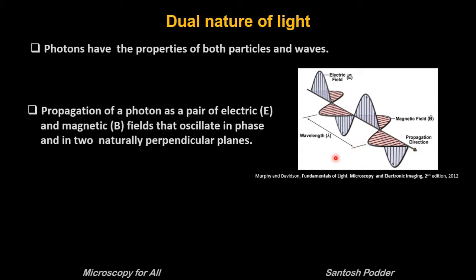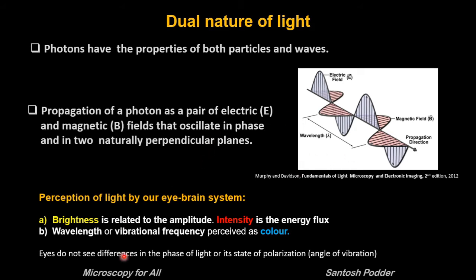For convenience it is common to show only the E-vector of a wave in a graph or diagram. In our human perception, brightness is related to the amplitude, and intensity is the energy flux — the rate of flow of light energy per unit area per unit time across the detector surface. The human eye-brain system perceives differences in light intensity and wavelength of color but does not see the difference in the phase of light or its state of polarization. But we have microscopes, such as the phase contrast microscope, which converts these invisible phase differences of light due to the sample into a brightness difference to enhance the contrast.